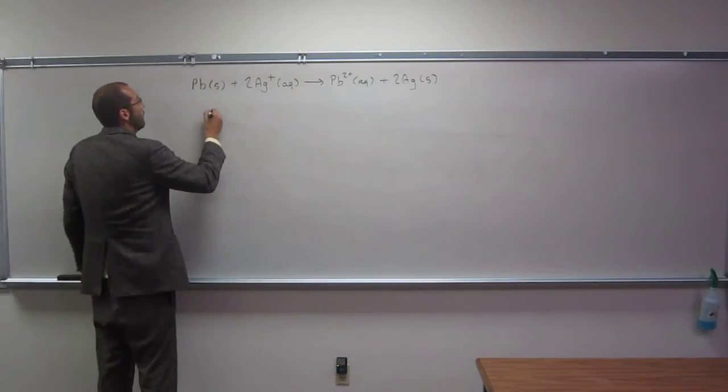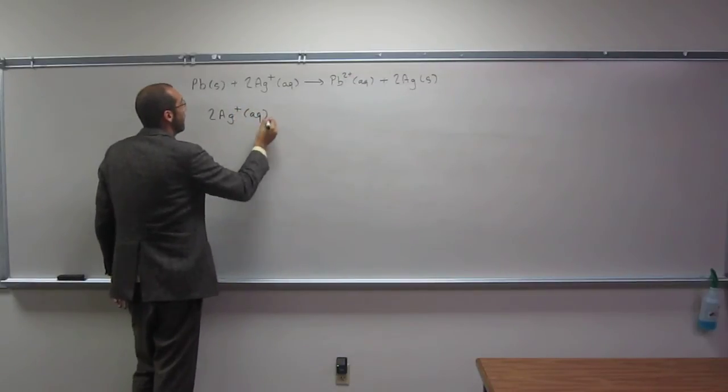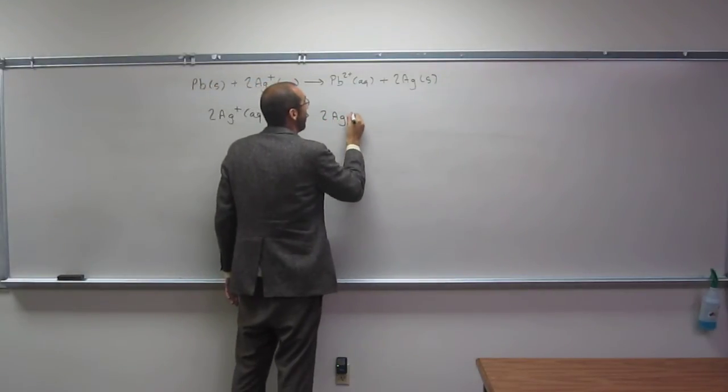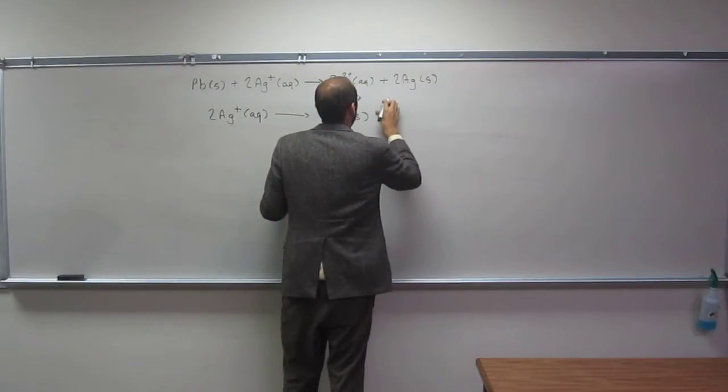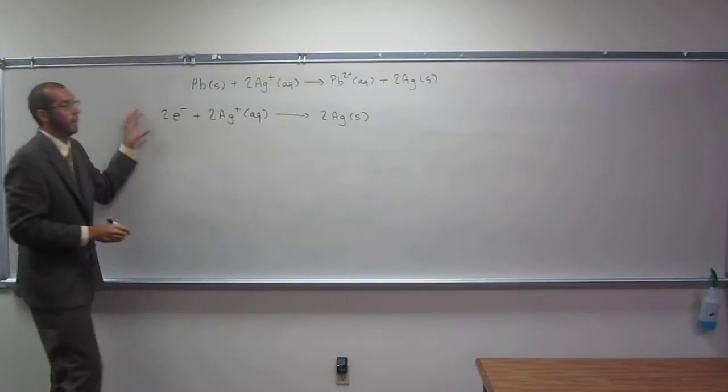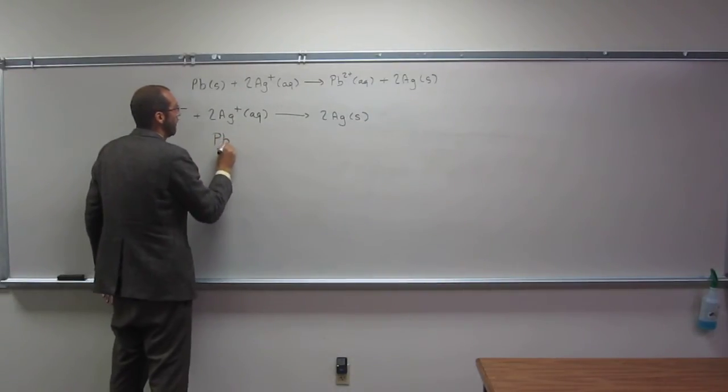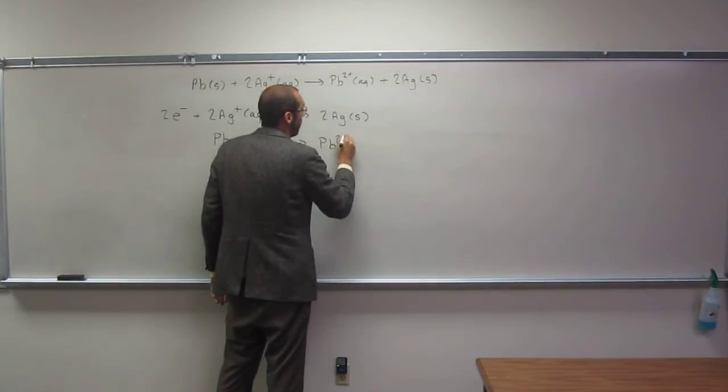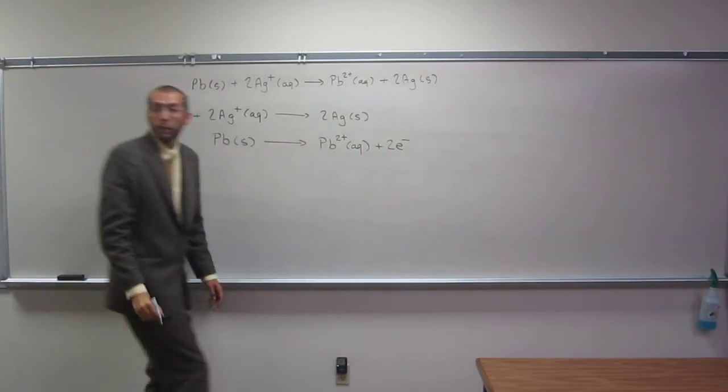So 2Ag+ aqueous goes to 2Ag solid plus 2 electrons there, and Pb solid goes to Pb2+ aqueous plus 2 electrons there.